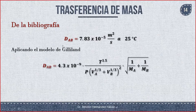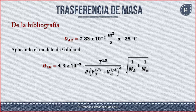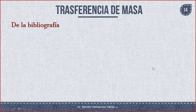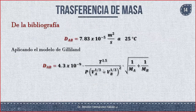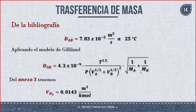Aplicando el modelo de Gilliland, lo único que vamos a hacer es colocar todo lo que ya conocemos. Ya conocemos el peso molecular de A y de B, y la temperatura. Aún falta calcular el volumen en A y el volumen en B. Del anexo 3 vamos a obtener estas expresiones, pero primero vamos a ver los anexos.